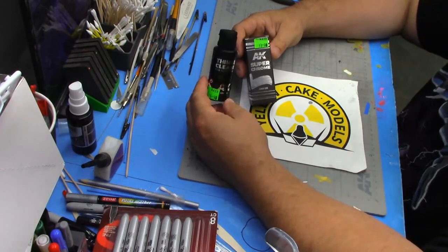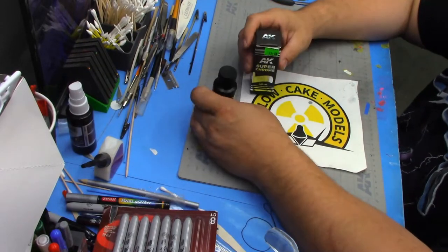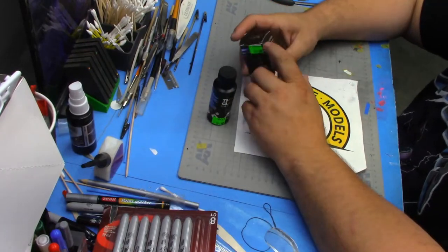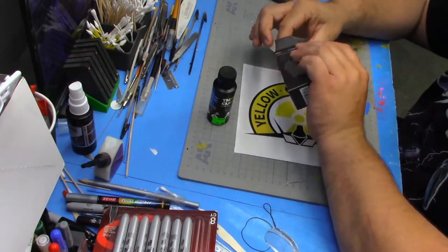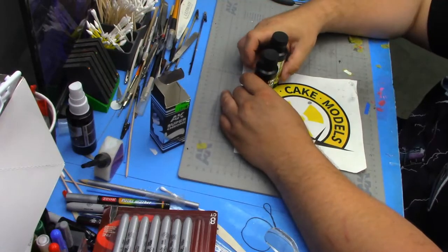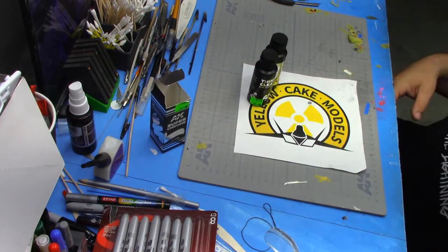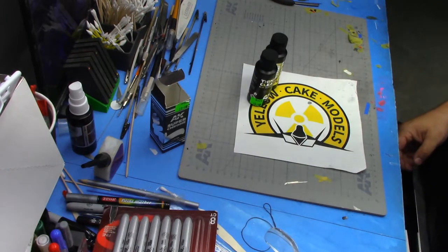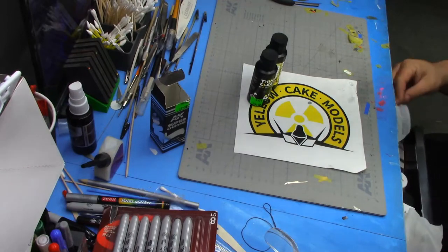AKA Super Chrome and the thinner cleaner. This says it's an ink. I believe Mig of Ammo is making a, what do you call that stuff? I have it right here. I don't have it right here. This stuff. Bare metal foil.